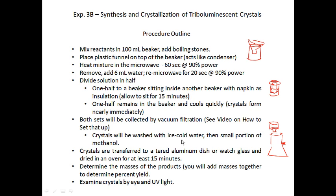After isolating both sets of crystals separately, transfer them to a tared aluminum dish or watch glass and place them in the oven in room 320 for 15 minutes to dry. Then determine the mass of each set of crystals produced, add the masses together to determine overall percent yield, and examine each set by eye and under UV light to see if you can observe a difference in crystal size or shape. The key question is: should we cool the solution quickly or slowly to produce large, well-formed crystals?